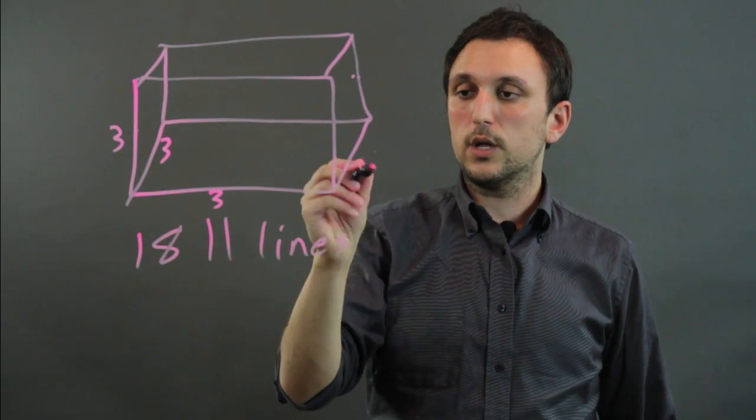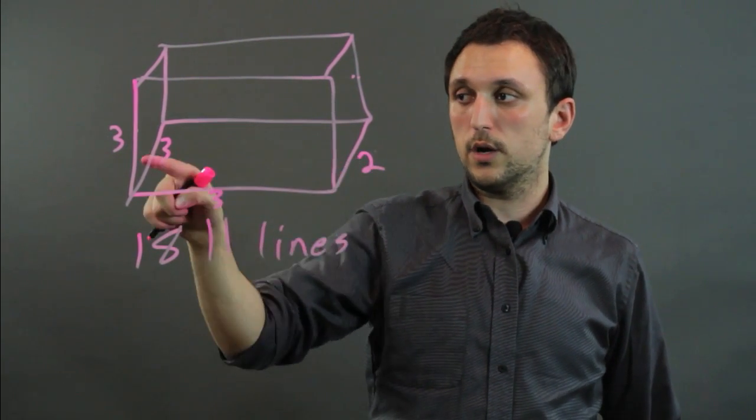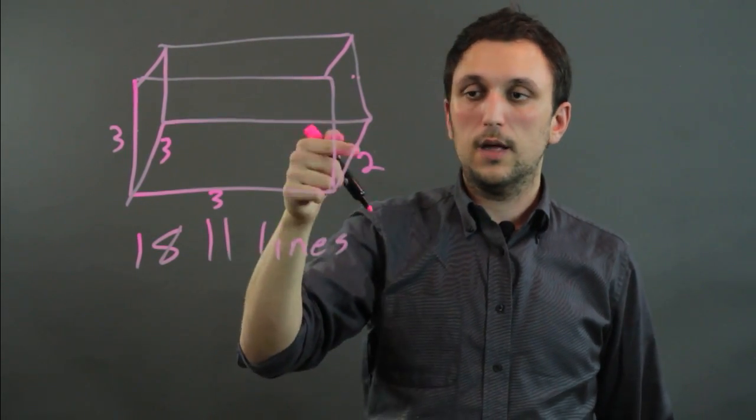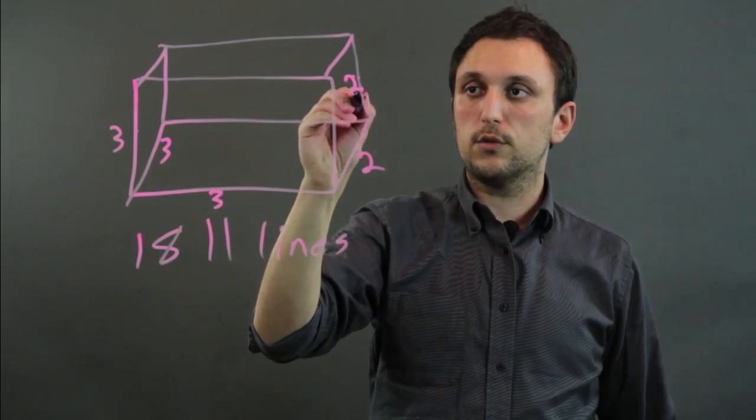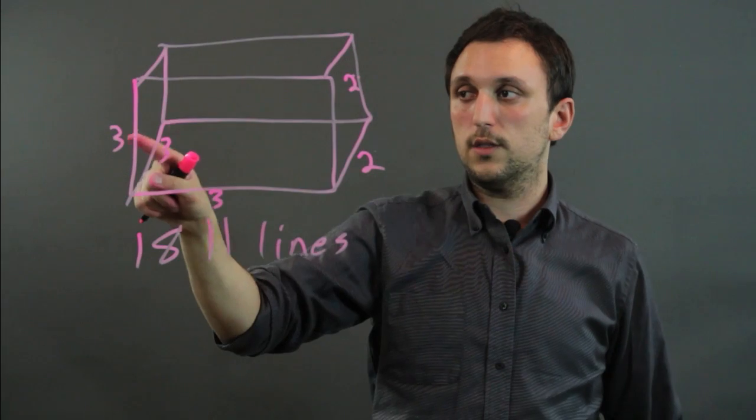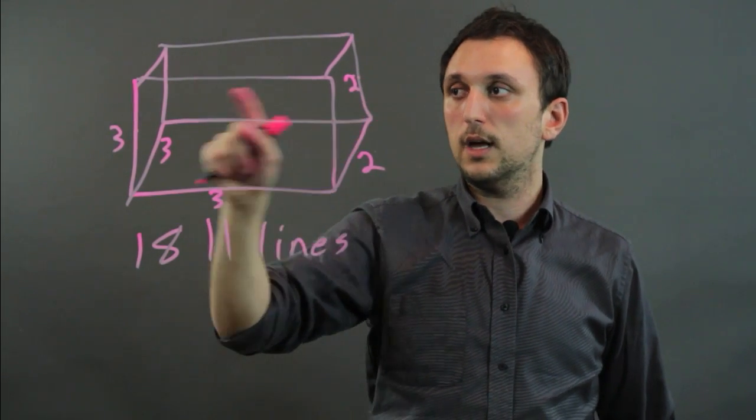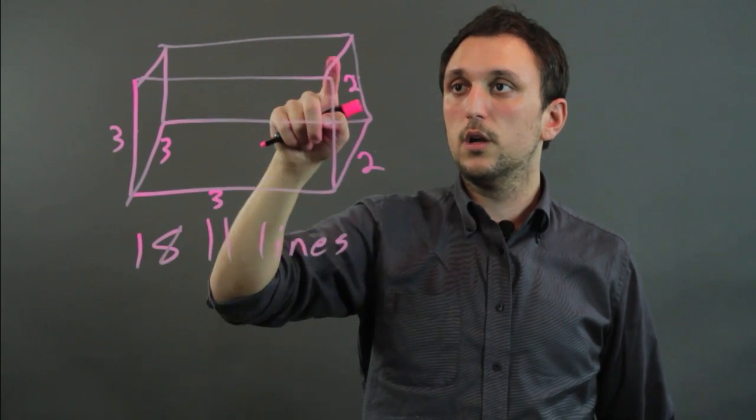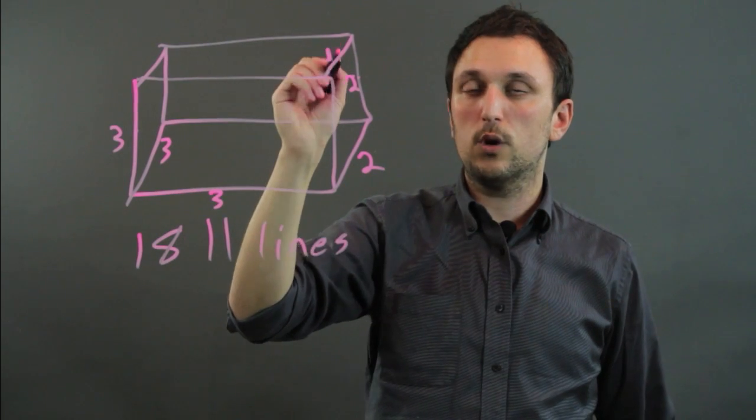So that's three and then we go to here and there's two because we already have this one so there's just this to this and this to that. And then we go to here and there's also two because again we've already done this so we have this to this and this to that. We go up here, and we already have this one and this one, so there's just this to this, so it's 1.